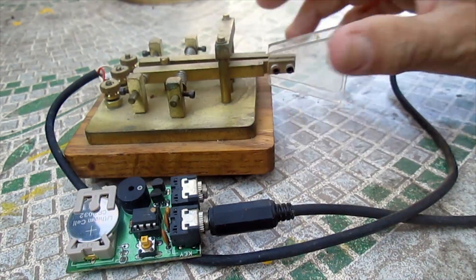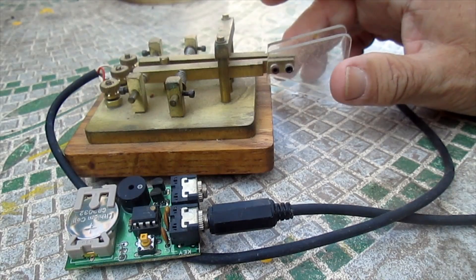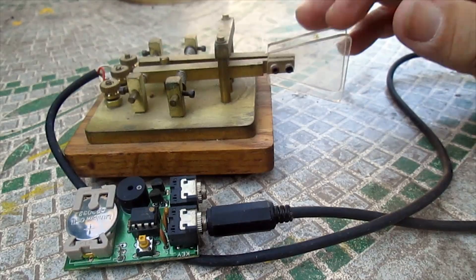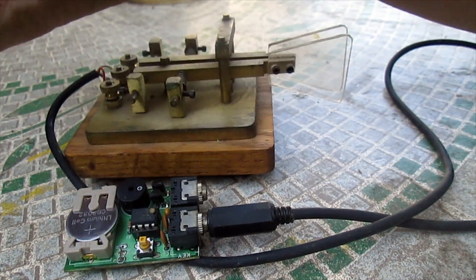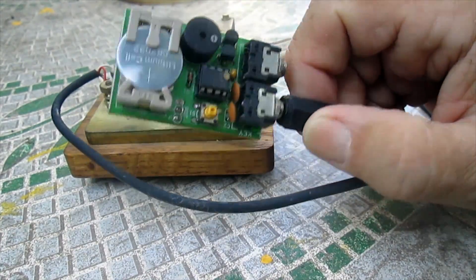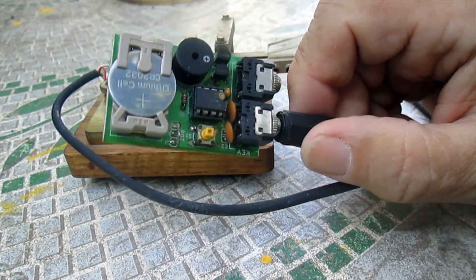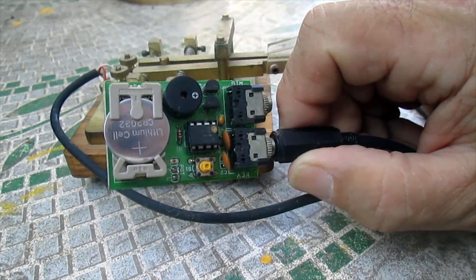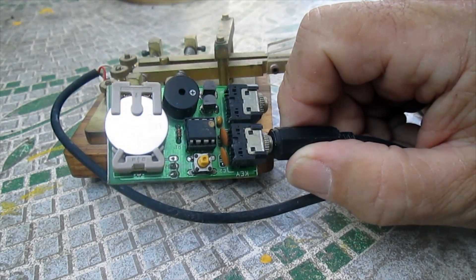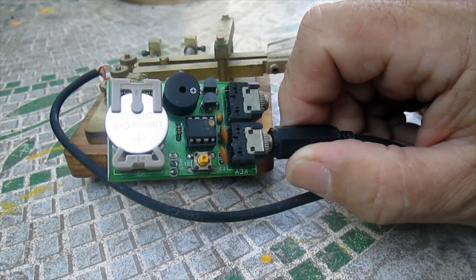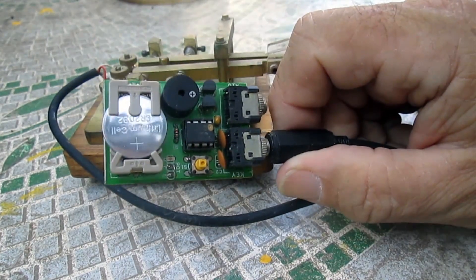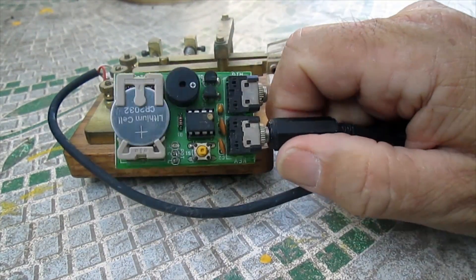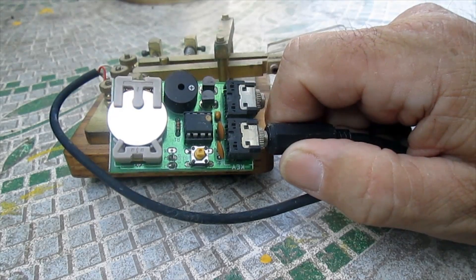Rather than it going straight to the transceiver, it runs through this board. What this board does is take our irregular dits and dahs and shapes them perfectly and makes them so they would be more intelligible on the other side. Now we still have to key in the right things, but this will make the code come out cleaner.